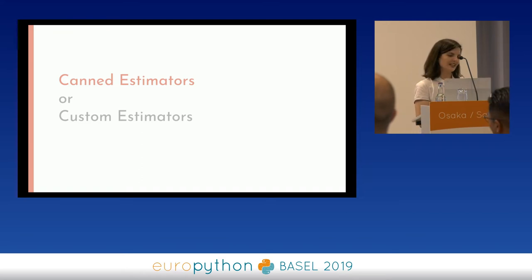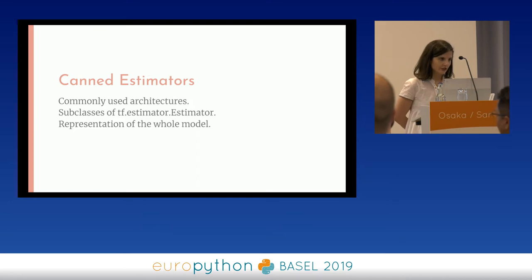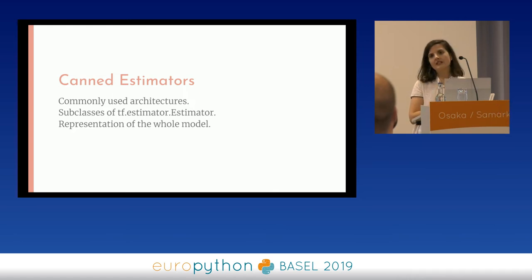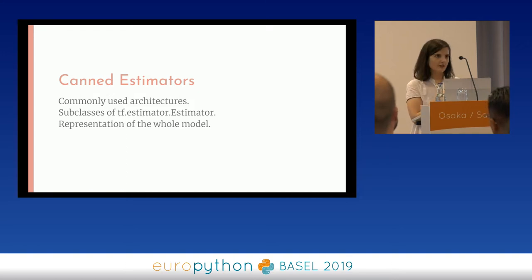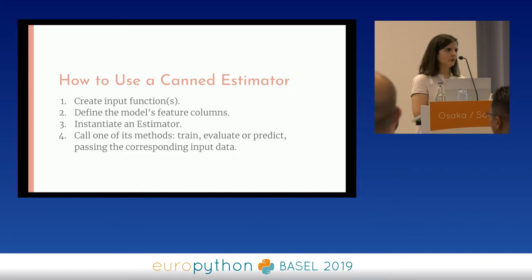First, let's use pre-made or canned estimators. This used to be called canned — I like it more. It's like going to the shop and buying a nice tomato soup ready to eat. Canned estimators are commonly used architectures. If you want to write a linear classifier or a linear regressor, it doesn't make sense to write it every single time. We all know how that works. What kind of canned estimators do we have? We have baseline classifiers, linear classifiers, and deep neural network classifiers.